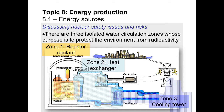Hello everyone and welcome to video 3 of 4 for 8.1, Energy Sources. This is the slide we left off with last time, where we saw how a nuclear reactor works. The control rods in combination with the moderator and the uranium produce heat through a fission reaction. That heat warms up the water, the water becomes steam, the steam turns a turbine which rotates a generator and produces electricity. The resulting steam gets condensed, becomes liquid water, and moves through the cycle once again.